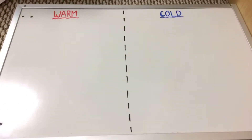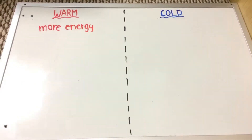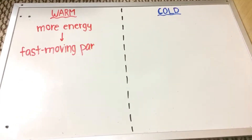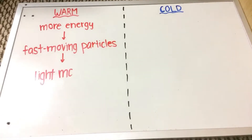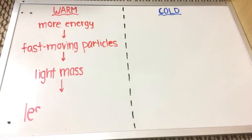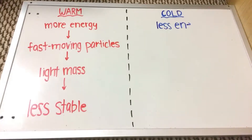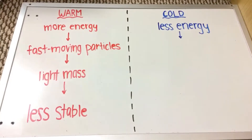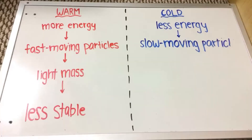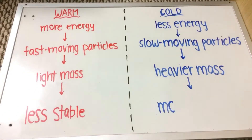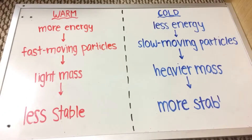The next part is in reference for the rest of the presentation. There's warm mass, which is more energy, fast-moving particles, and light mass, and less stable. And on the other hand, there's cold mass, which is less energy, slow-moving particles, heavy mass, and more stable.